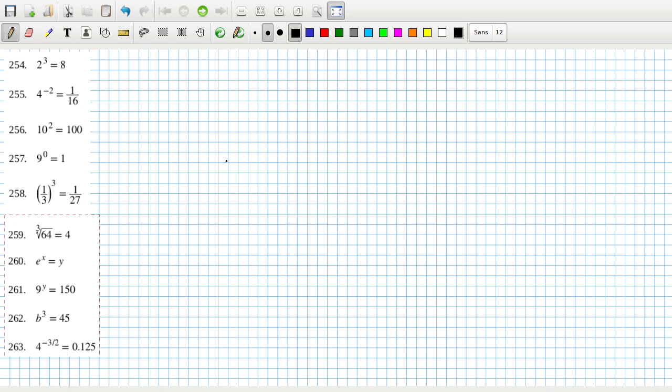Now we have to write it in log form. So this is log base 2 of 8 equals 3. 2 to what power makes 8? The answer is 3. So it's this and this go on the log, and the answer is the power 3.